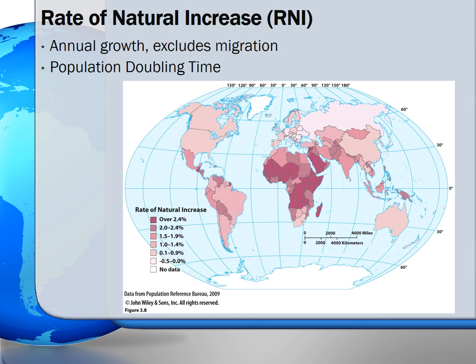Another demographic that geographers track is the rate of natural increase of a given population. The rate of natural increase, or RNI for short, is the percentage of annual growth in a population excluding migration. In other words, the rate of natural increase is the crude birth rates minus the crude death rates and is stated as a percentage.